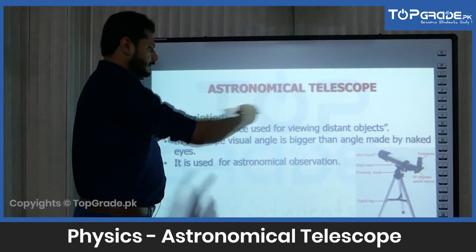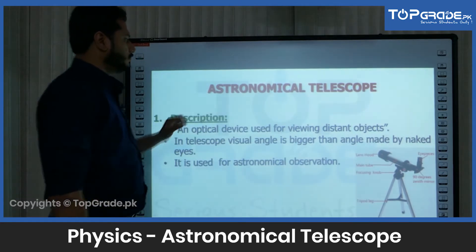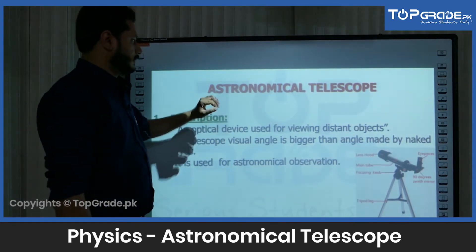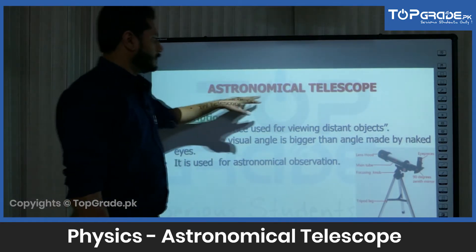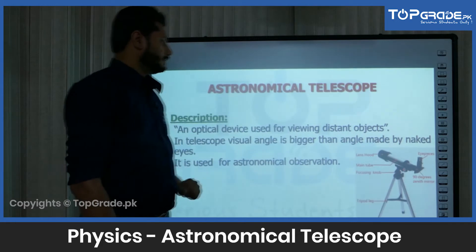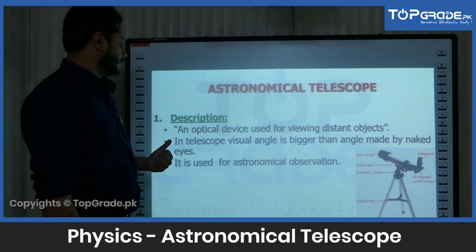If we see other objects on the ground, we call it a terrestrial telescope. And in astronomical study, we use an astronomical telescope.